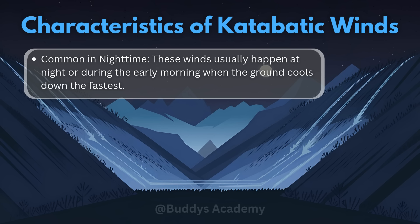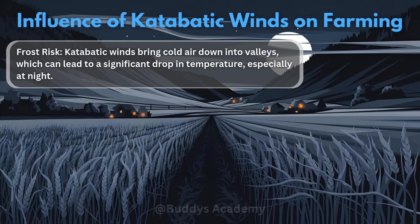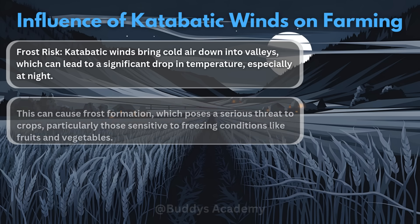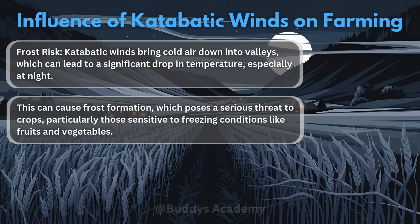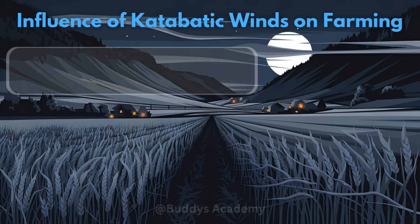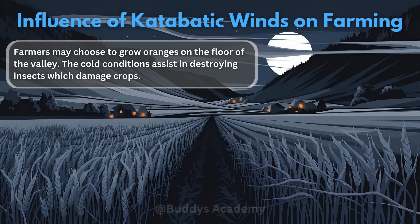Let's look at the influence of katabatic winds on farming, as this can be asked as an essay question in your exam. The first influence would be frost risk. Katabatic winds bring cold air down into valleys, which can lead to a significant drop in temperature especially at night. This can cause frost formation, posing a serious threat to crops — particularly those sensitive to freezing conditions like fruits and vegetables. Frost is a layer of ice crystals that forms when water vapor turns directly into solid ice on surfaces below freezing temperature. Farmers may choose to grow oranges on the valley floor, as the cold conditions assist in destroying insects which damage crops.